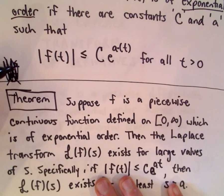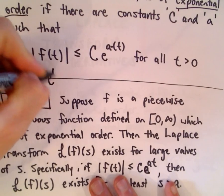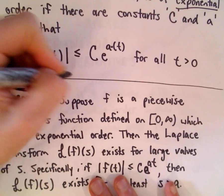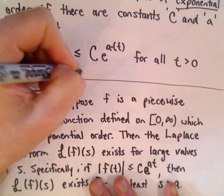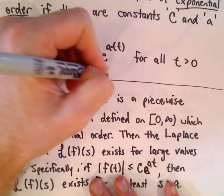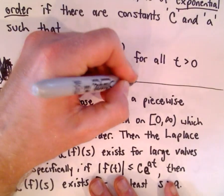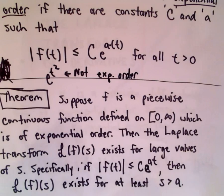Not all functions are of exponential order. For example, e^(t²) would not be of exponential order — just to throw out a function that wouldn't satisfy this condition.